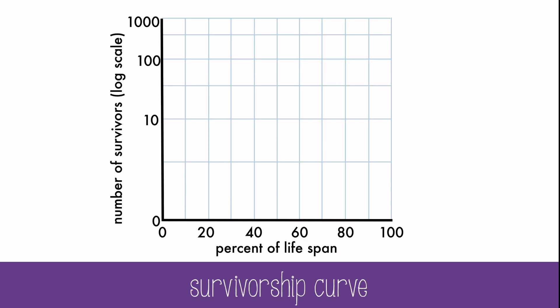A survivorship curve is a graph that shows the number or proportion of individuals surviving to each age for a given species or group. Type 1 survivorship curves produce few offspring and care for the young. They have high survival rates of the young, and individuals live out most of their expected lifespan and die in old age. Examples of Type 1 are humans or even large mammals like elephants.